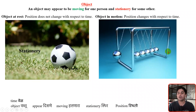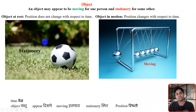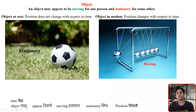So to summarize: whenever the position does not change with respect to time, we say the object is stationary or at rest. And whenever the position changes with respect to time, we say the object is in motion, or the object is moving. Thank you.